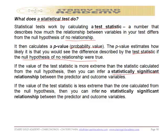If the value of the test statistic is more extreme than the statistic calculated from the null hypothesis, then you can infer a statistically significant relationship between the predictor and outcome variables. And if the value of the test statistic is less extreme than the one calculated from the null hypothesis, then you can infer no statistically significant relationship between the predictor and the outcome variable.